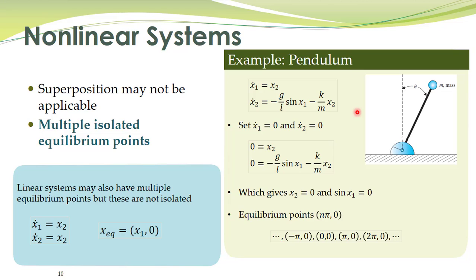Linear systems can have multiple equilibrium points, but only as connected or adjacent equilibrium points — not isolated ones. These are indicated here not as dots but as a continuous line, where all the points on that line are equilibrium points for the linear system.